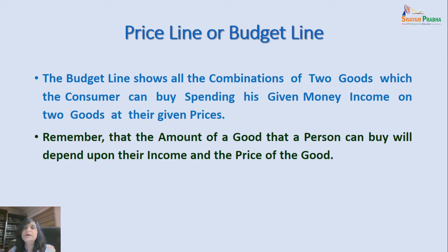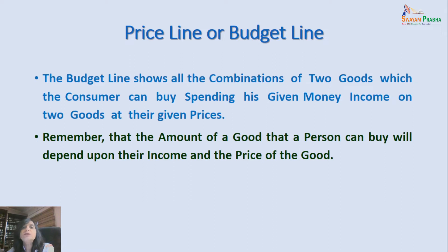Today we will take further the concept of the ordinal approach and understand what is meant by a price line or budget line. The budget line basically shows you the combination of two goods which a consumer can buy, spending the given money income at the two given prices of those two goods. That is, if he is buying two goods X and Y with his given money income and given prices of X and Y, how much of these two goods he can purchase is represented in the budget line.